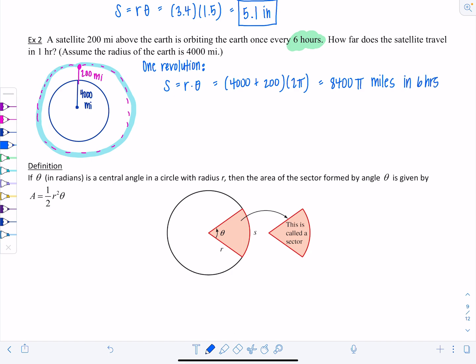8,400π miles in six hours. They're asking how far does the satellite travel in just one hour? Assuming its speed is constant, I can divide this distance by six. In one hour, it's going to complete one-sixth of its journey. So 8,400π divided by six miles. Leave the π in your answer. Divide 8,400 by six, and you get 1,400π miles.